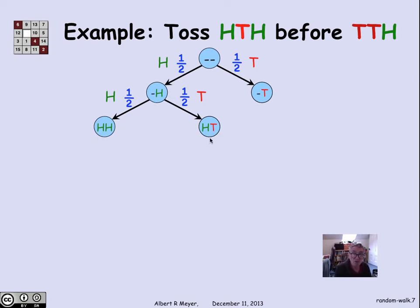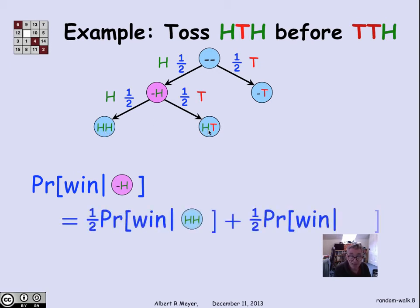This structure of the state diagram tells us that if I want to know what the probability of winning, given that I've flipped exactly one head at the start, the probability is simply by, again, total probability, the probability of winning from HH weighted by a half, and the probability of winning from HT weighted by a half. And I wind up, again, with a simple linear equation that connects the probability of winning in one state with the probability of winning in the states that it goes to.